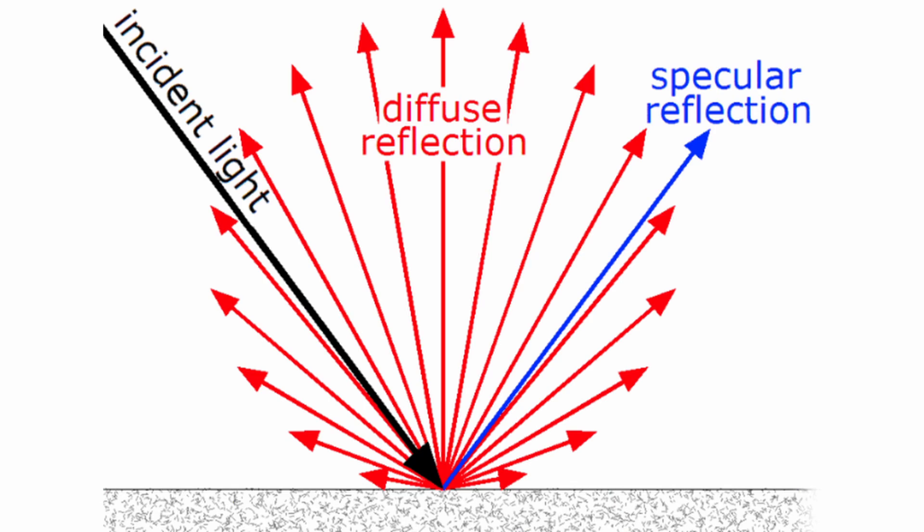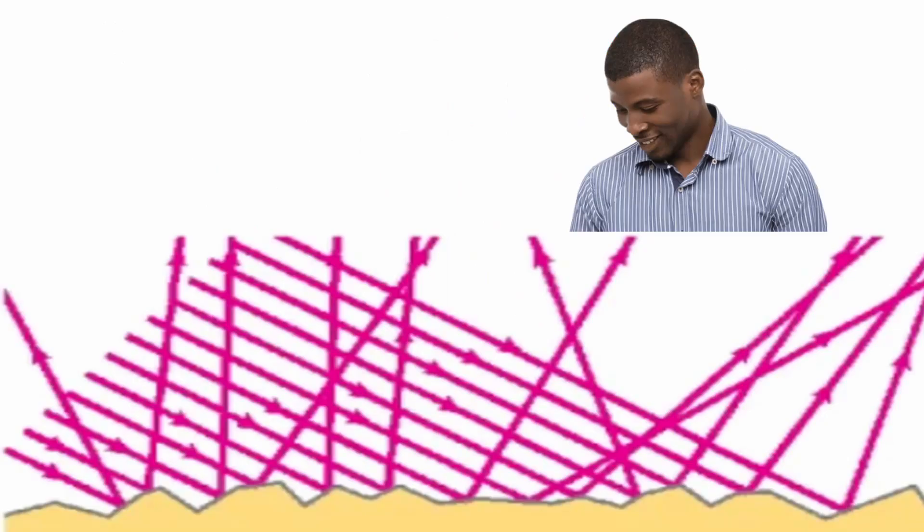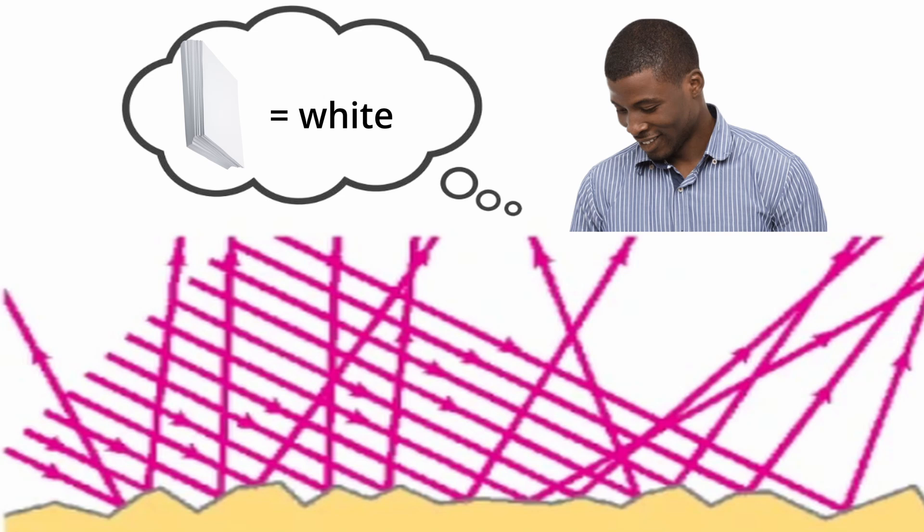On the other hand, paper performs something called diffused reflection. This means that the rays of light are scattered in all directions once they hit the surface. And because these rays of light become mixed and jumbled before they enter our eyes, we perceive it as white.